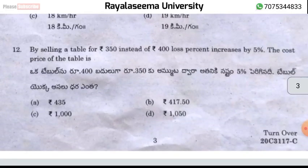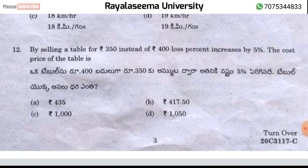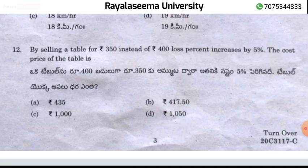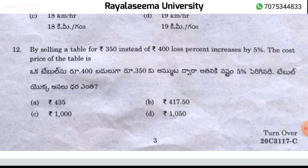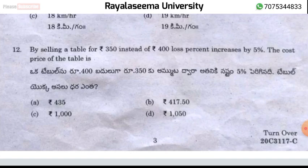Question number 12: Selling a table for ₹350 instead of ₹400 increases the loss percentage by 5%. That means the extra ₹50 corresponds to 5%, so 100% equals ₹1000. Therefore, the cost price of the table is ₹1000 — option B is the correct answer.